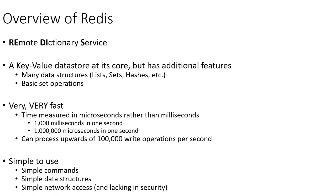Redis is very fast — measured in microseconds rather than milliseconds — and very simple to use. Whereas with SQL, HBase, or MongoDB there is fairly complex query structure, Redis commands are generally just the command itself followed by the key and the value. Those three elements are generally all we pass in or out of Redis.